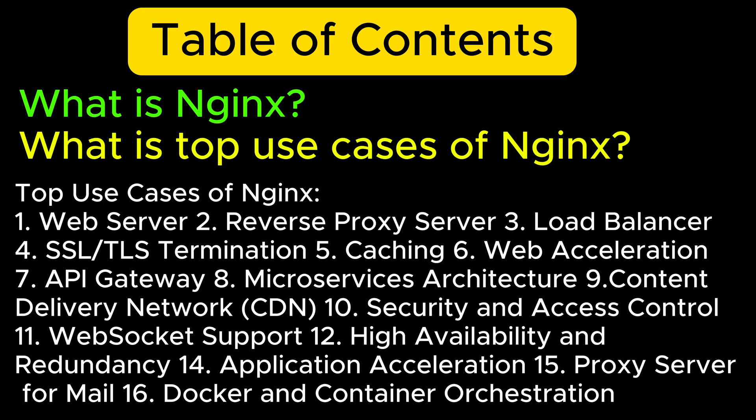Another common use case is the API gateway. We will do some practical examples of how to use Nginx with an API gateway. If we have a microservices architecture, we will discuss how to implement that architecture with Nginx — including how different services communicate with each other, how the client communicates with those services through an API gateway, and how those services can be utilized with Nginx.